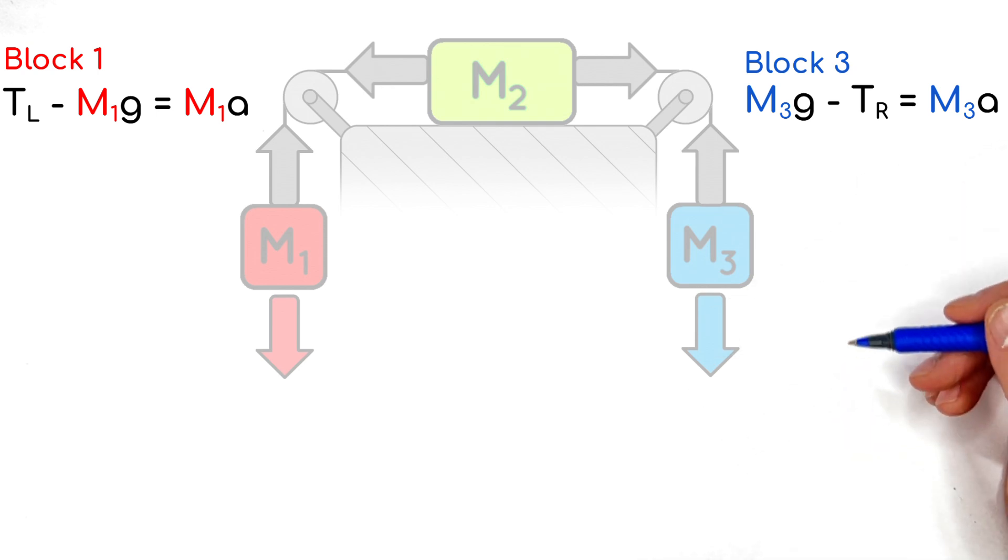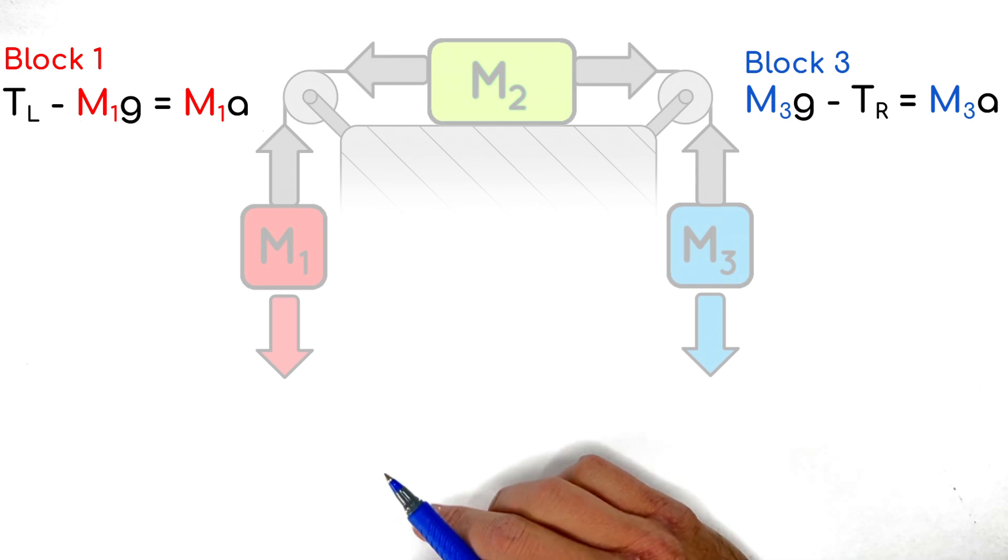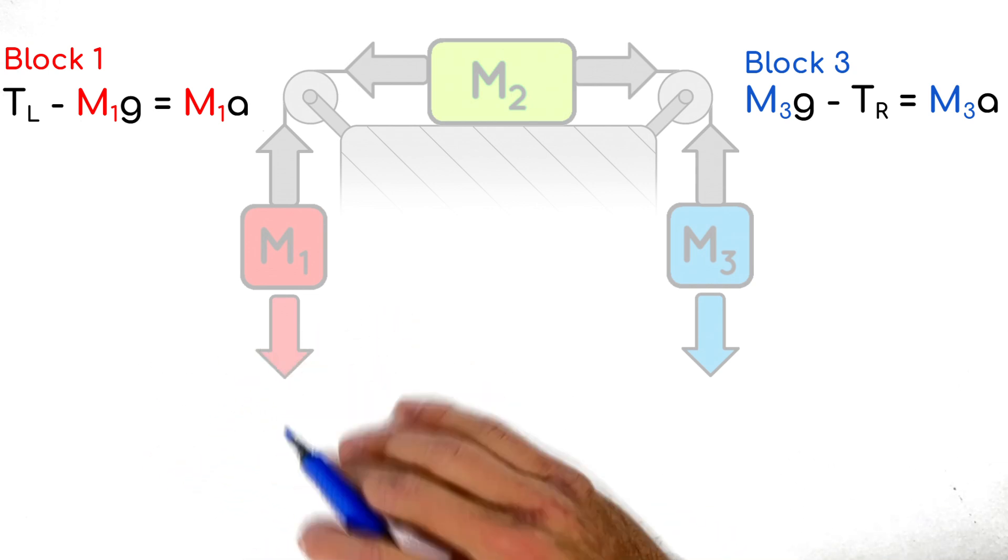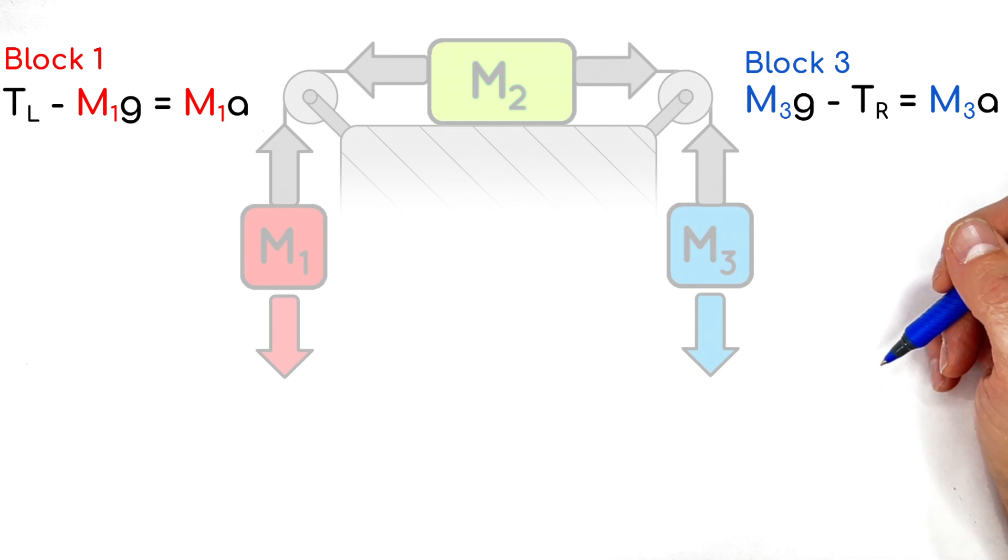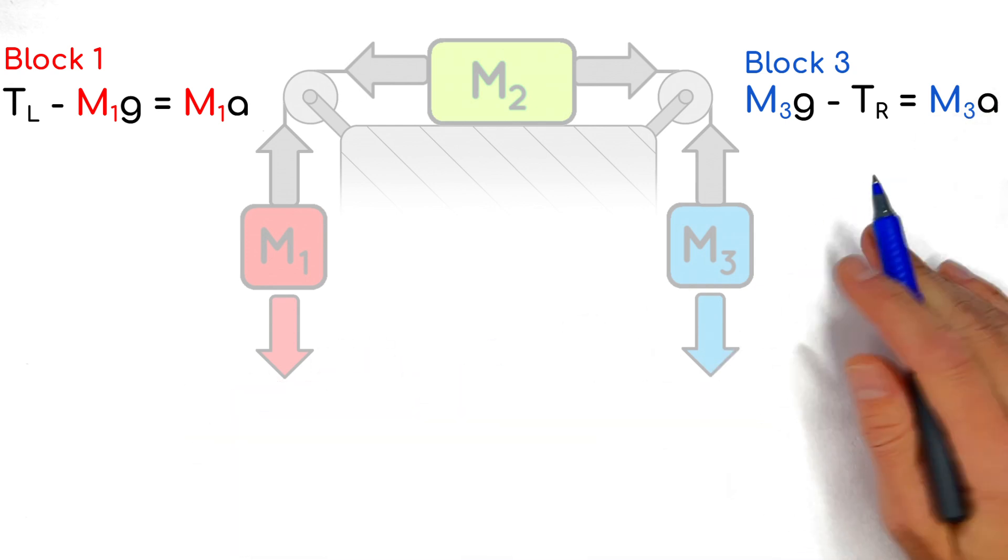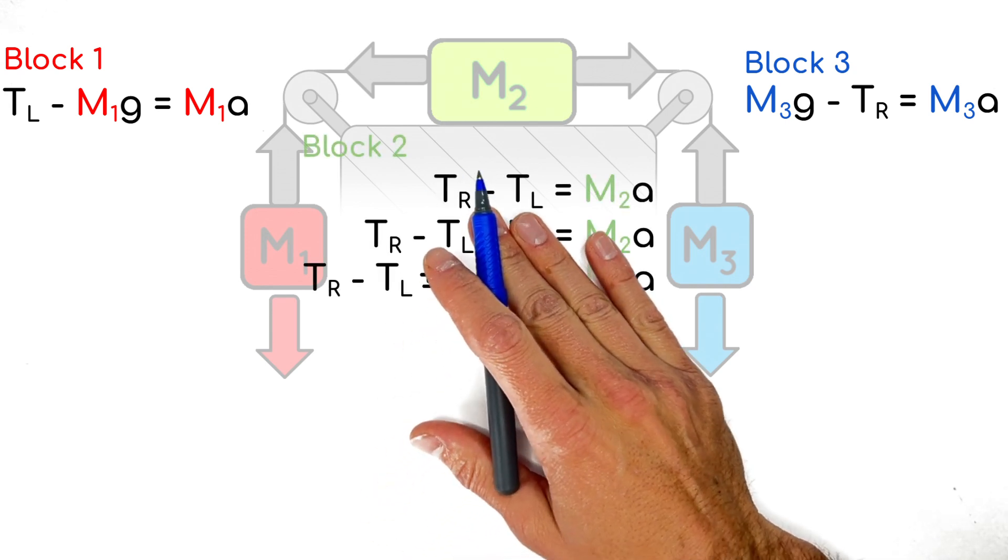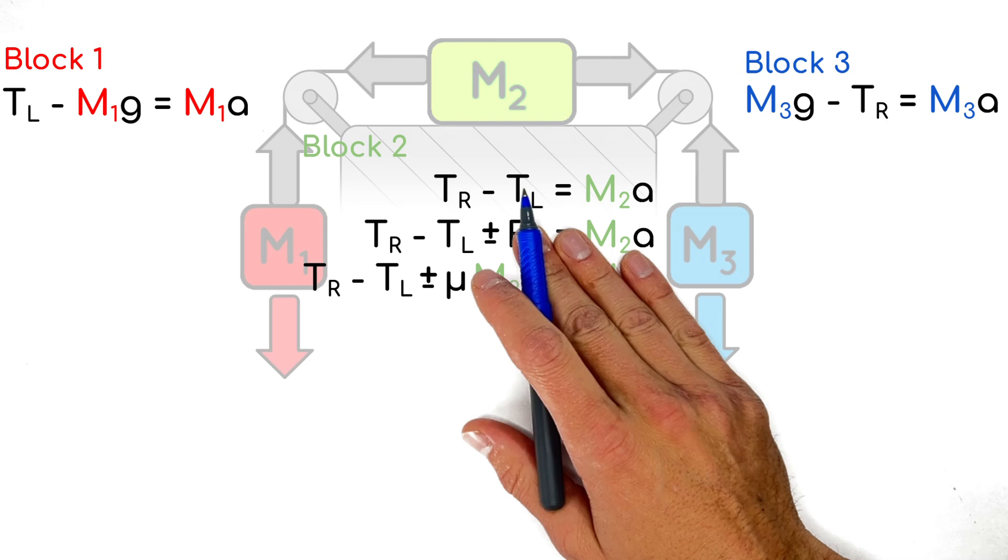Now, the issue here is if you look at this equation and this equation over here, we have an unknown tension on the left, an unknown acceleration, and then an unknown tension on the right. That is three unknowns. And of course, we only have two equations. So what we're going to need to do is look at this central block here, which quite literally and mathematically is tying everything together.